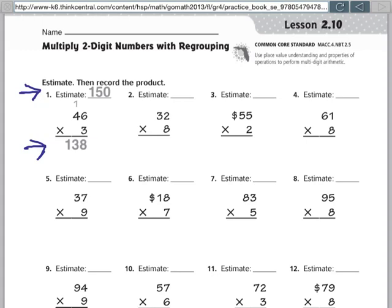So first of all, what we do when we are estimating is we take our big number that we're multiplying by and we round that number. So when I look next door to the 3, there is a 2. That's going to make my 3 stay the same and everything after it become a 0.